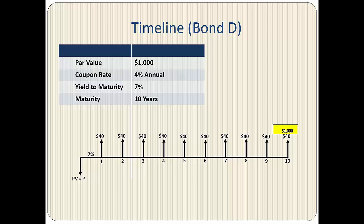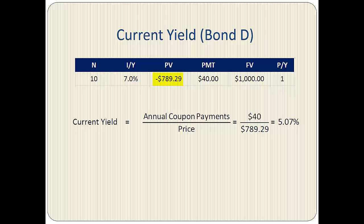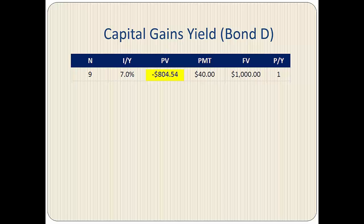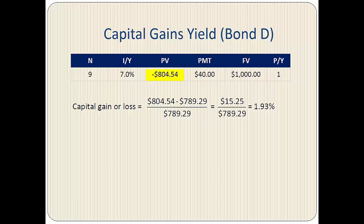Here is the timeline for Bond D. The par value is $1,000, the coupon payment is $40, the yield to maturity is 7%, and the bond matures in 10 years. With N equals 10 and payment equals $40, we calculate the present value to be $789.29, so the current yield is $40 divided by $789.29, or 5.07%. To find the capital gain yield over the next year, we find the price with N equals 9 to be $804.54, and the capital gain yield to be 1.93%.